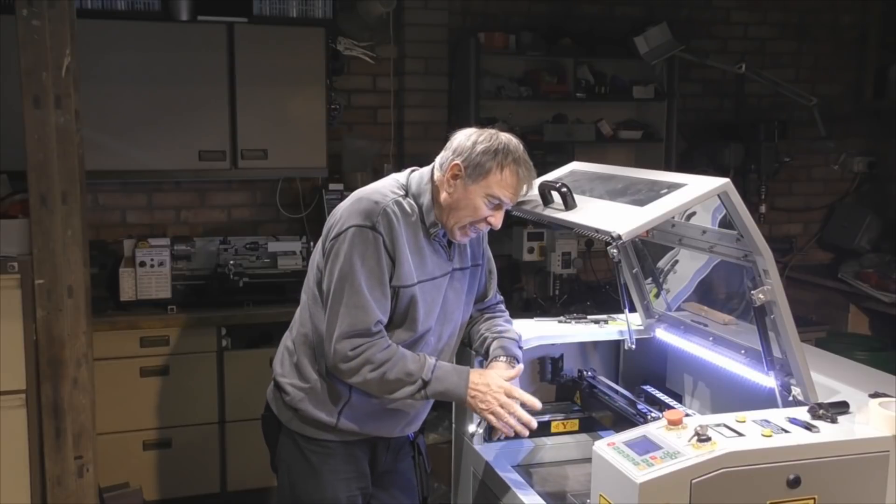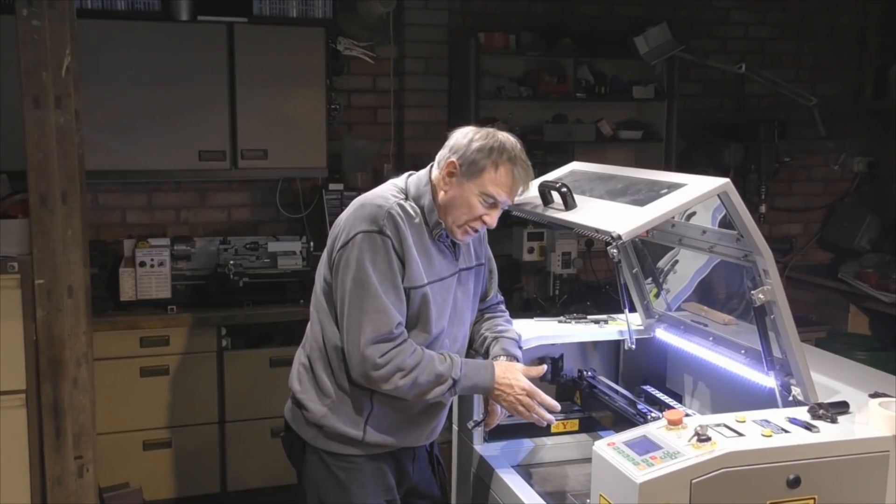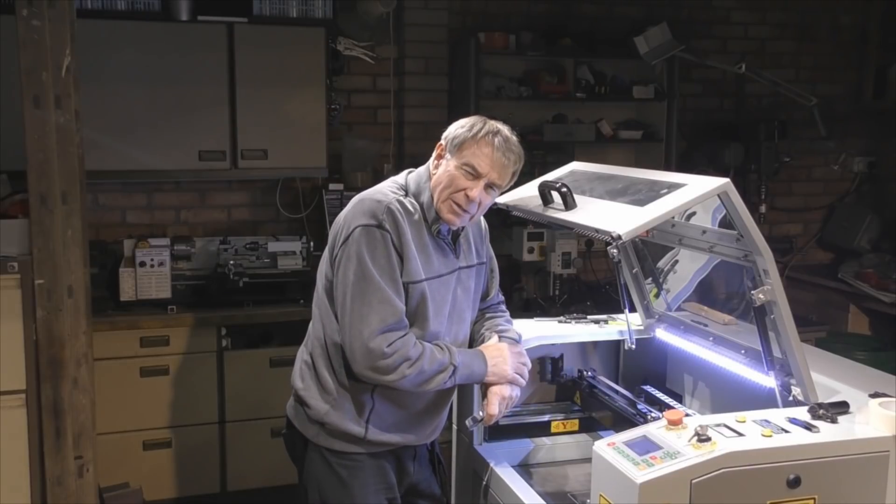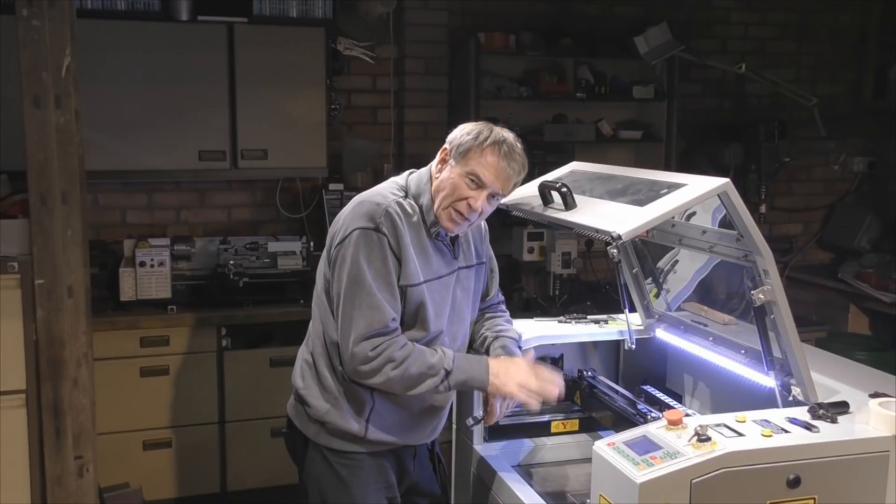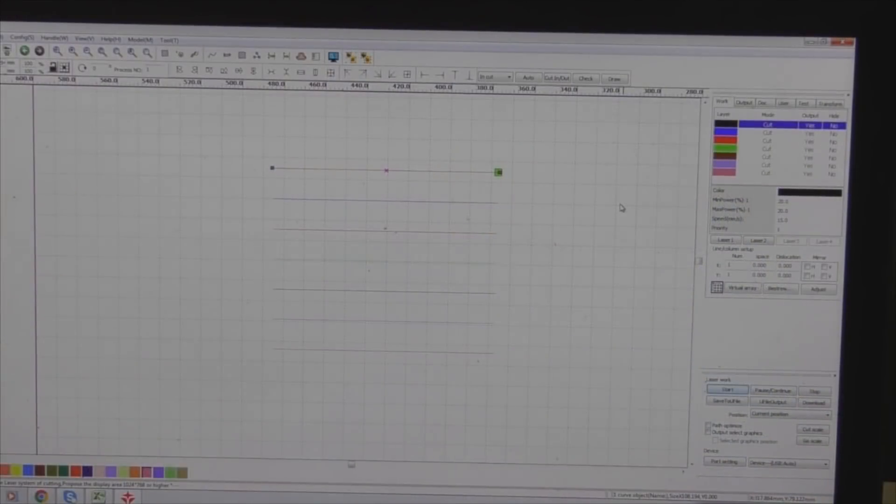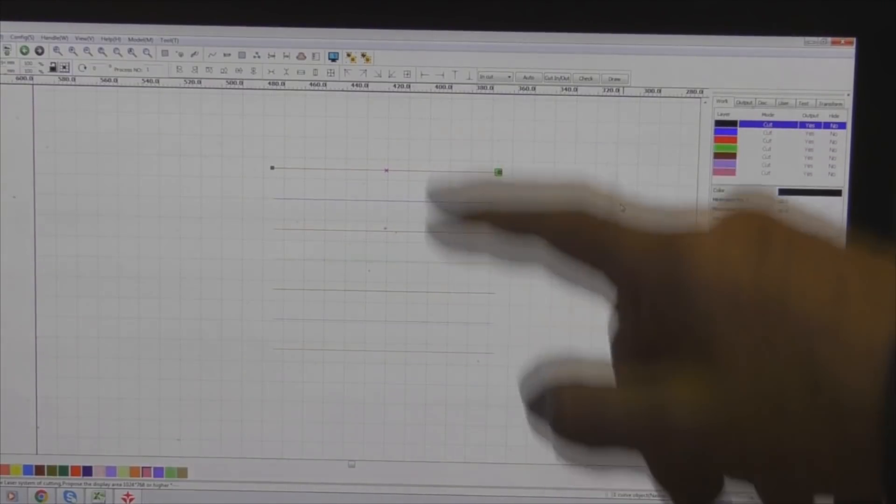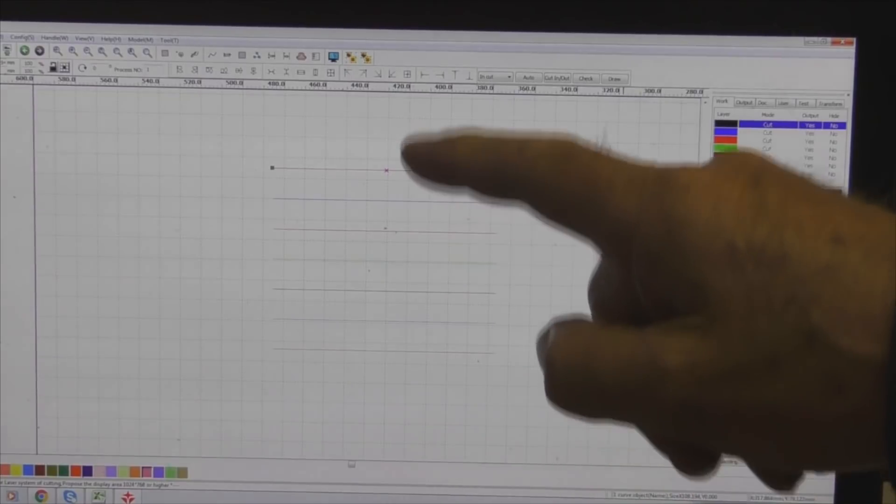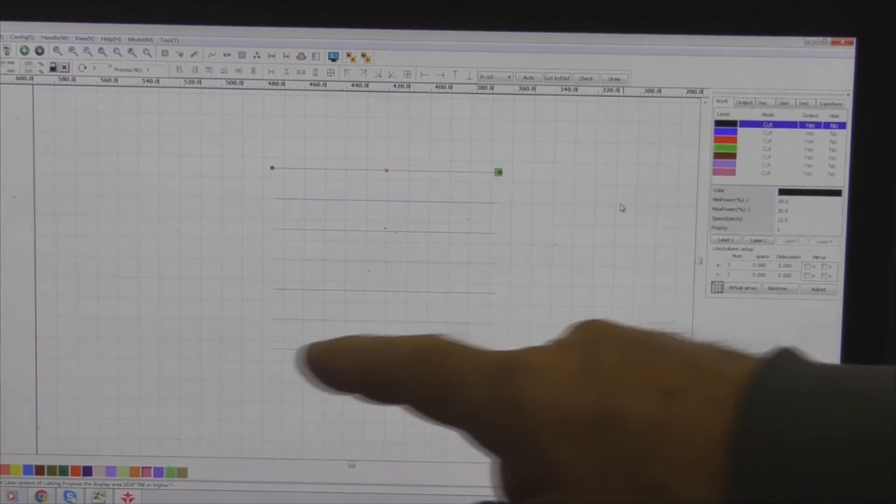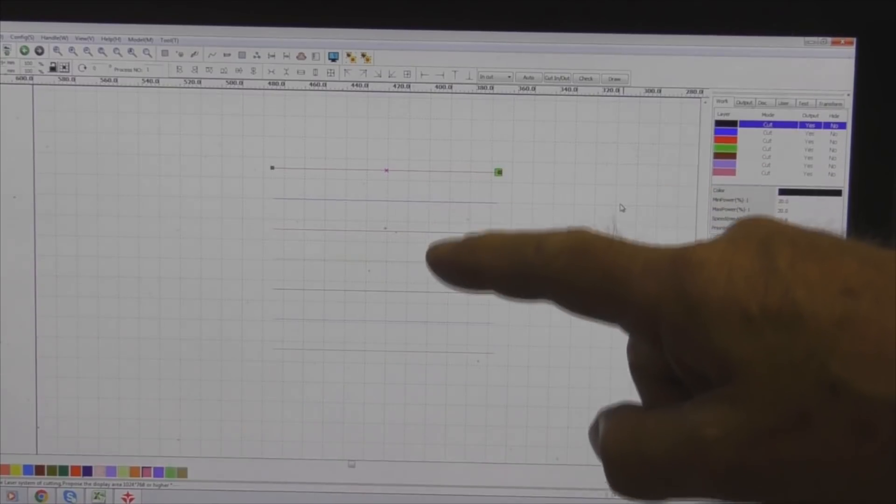So what we're going to do today is a little demonstration of one of the features that could come into play when we're looking at graphics in the future. Now, on this program here, I've got a very simple pattern of about seven lines. Basically, what I'm going to do here is to use the same power to cut every one of these lines. We've got different speeds on each one of these lines.